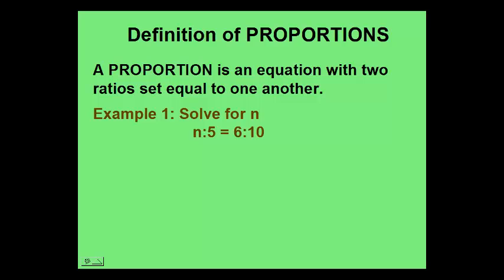We'll demonstrate this in an example. The ratio n to 5 is equal to 6 to 10. We wish to solve for n. First, we'll write these ratios in fraction form. So n to 5 can be written as n over 5, and 6 to 10 can be written as 6 over 10.